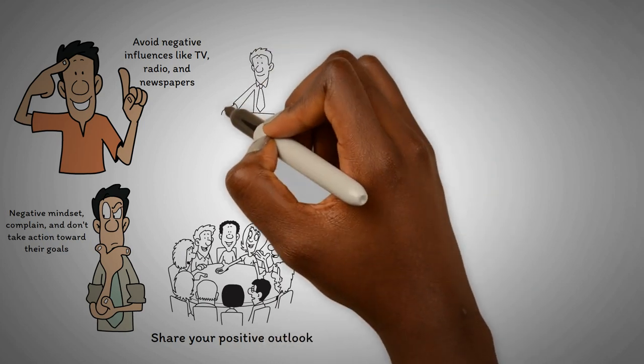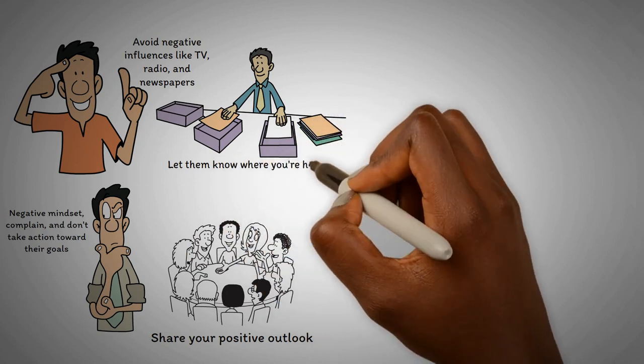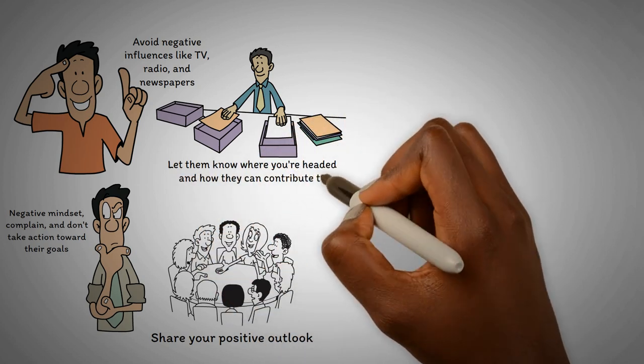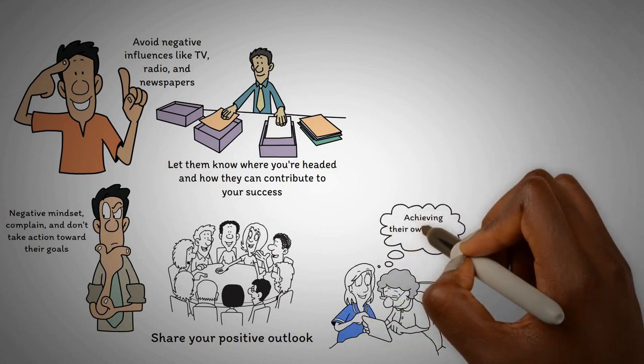Next, communicate your goals and expectations to the people in your life. Let them know where you're headed and how they can contribute to your success. Encourage and support your loved ones in achieving their own dreams as well.